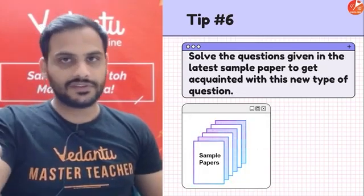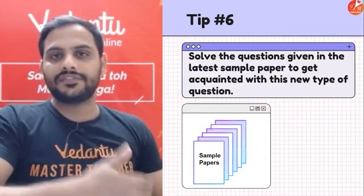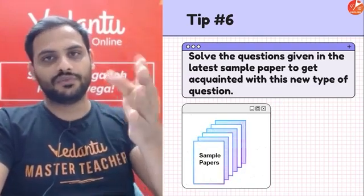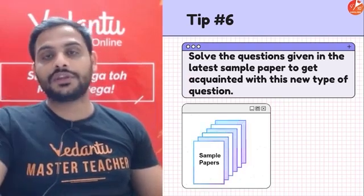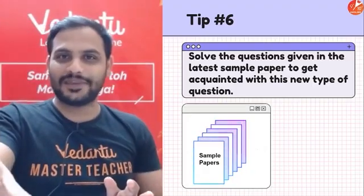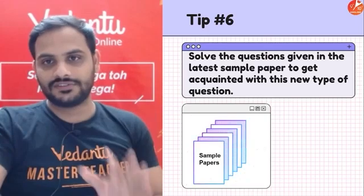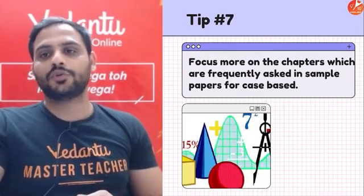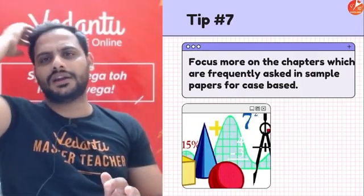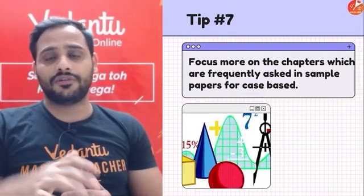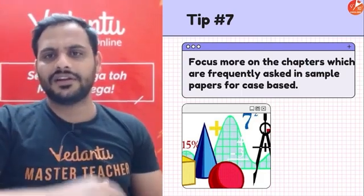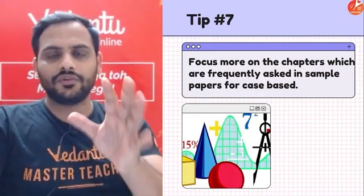Tip 6: Practice from different sample papers. CBSE has also released sample papers — use those, or any other book you have. See what kind of case study questions are framed. We're also doing a case study series where I show you the passage first and then go through the questions — that's very helpful. Tip 7: Focus more on chapters that are frequently asked, like polynomials, quadratic equations, and triangles, as case studies from these chapters are very common.